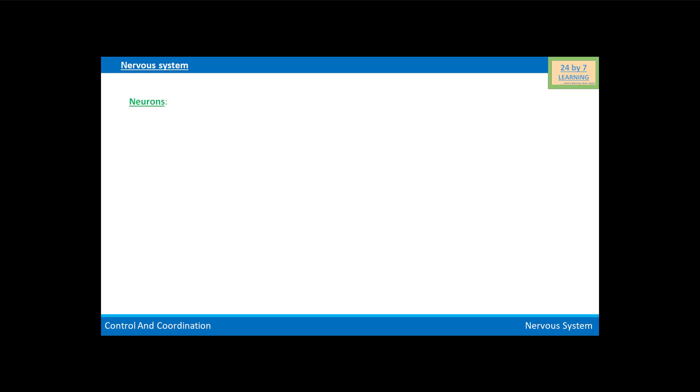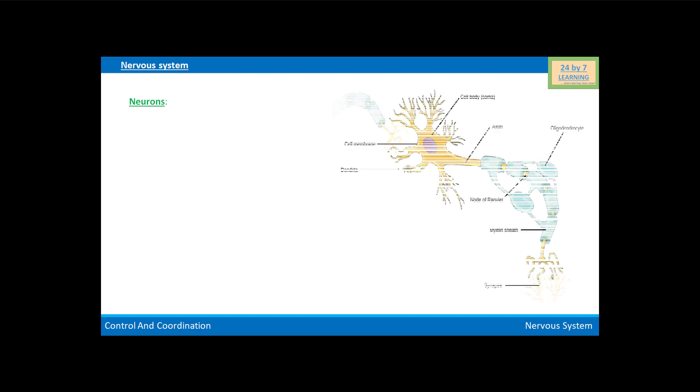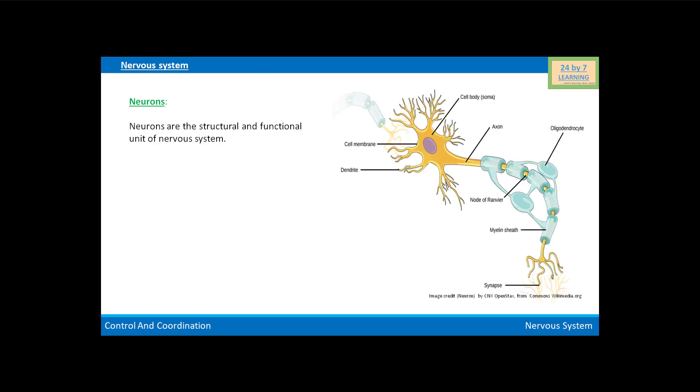Now we will know about neurons. Neurons are the structural and functional unit of the nervous system. A neuron is a microscopic structure composed of three major parts: namely cell body, dendrites, and the axon.